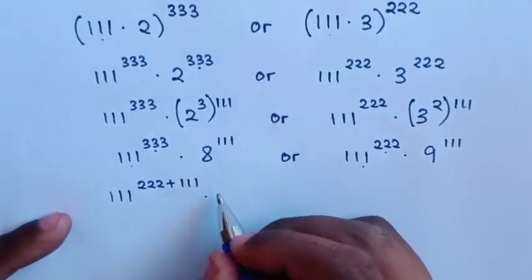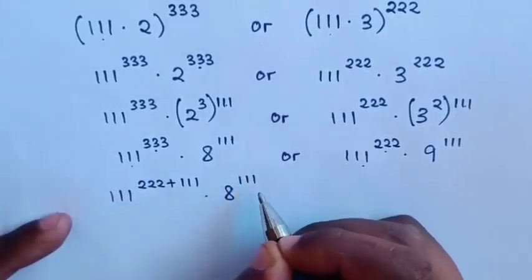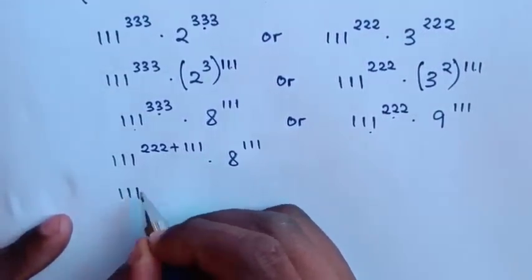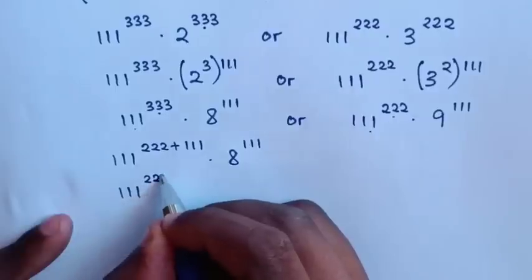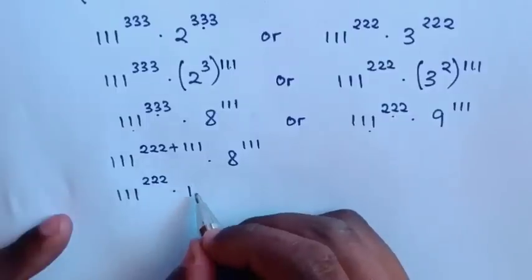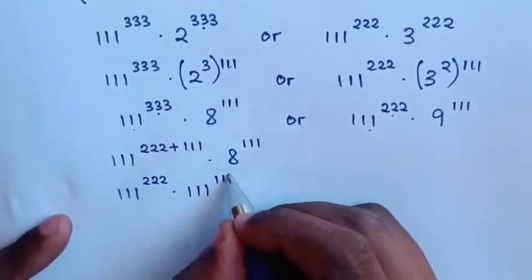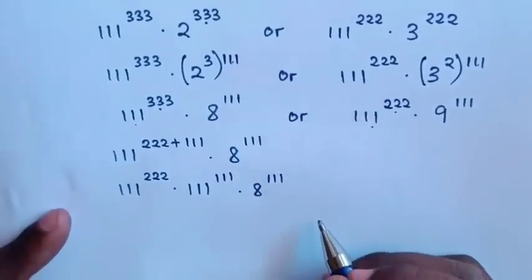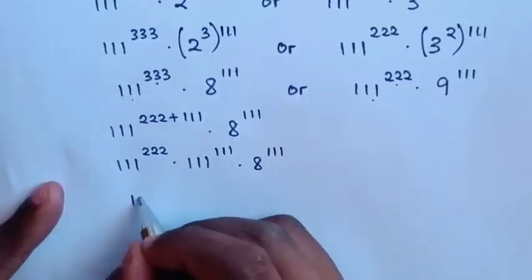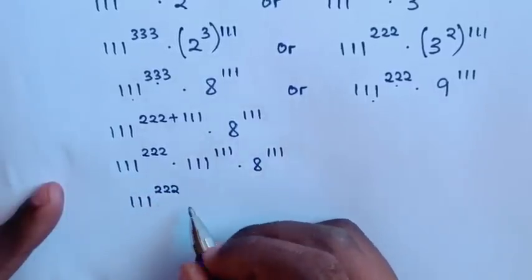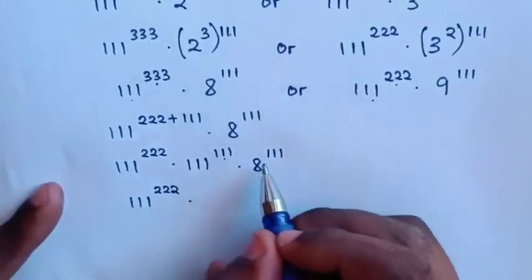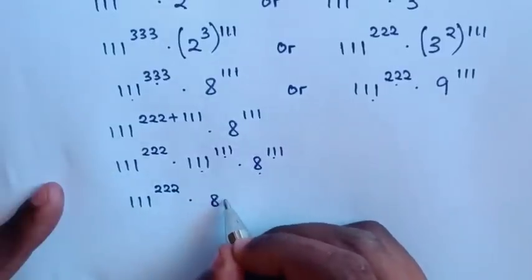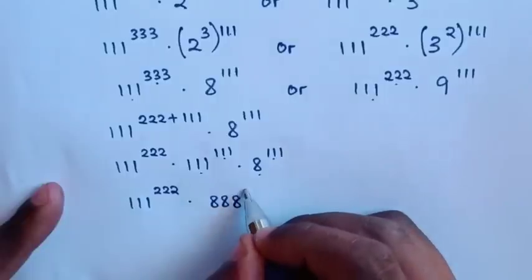Then, times 8 power of 111. In this exponent, it will be 111 power of 222 times 111 power of 111, then times 8 power of 111. It will be 111 power of 222 times a common power of 111. We multiply the bases, which gives 888 power of 111.